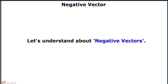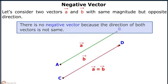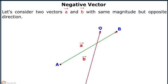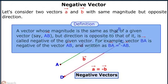Let us understand negative vectors. Consider two vectors A and B with the same magnitude but opposite direction. Then vector B is called the negative vector of A, or vice versa. Such vectors are called negative vectors. A vector whose magnitude is the same as that of a given vector but opposite in direction is called the negative of the given vector. For example, vector B equals negative of vector A.